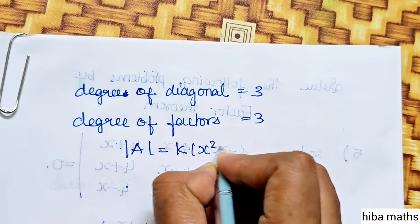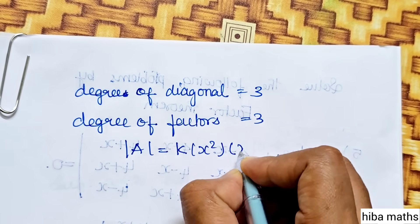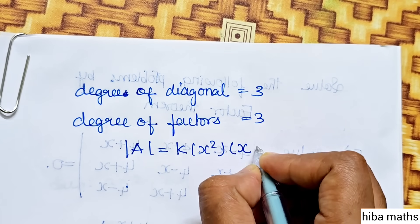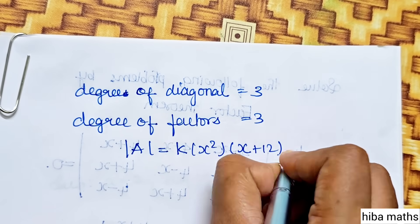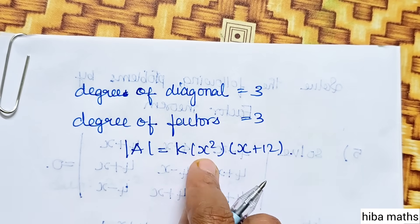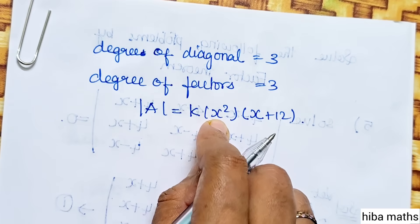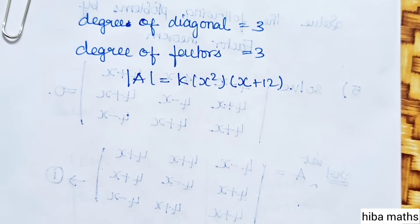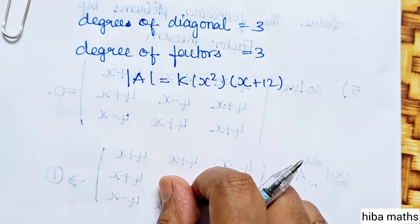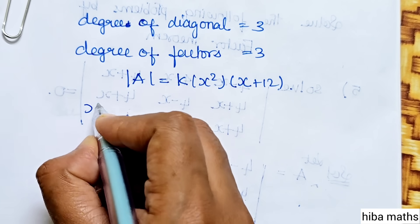So the value is x squared into x plus 12. Now if we have the x value, we can substitute x into x.